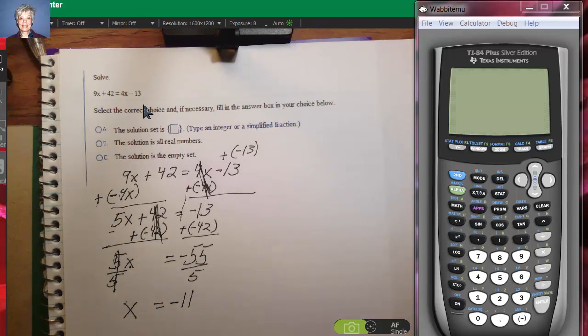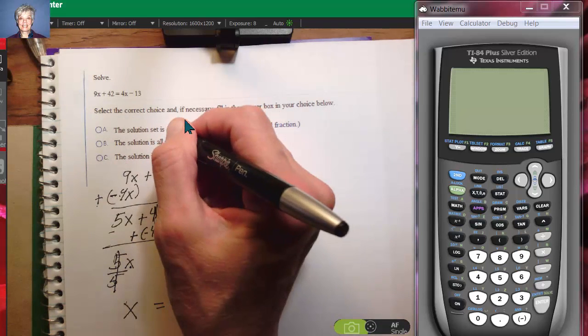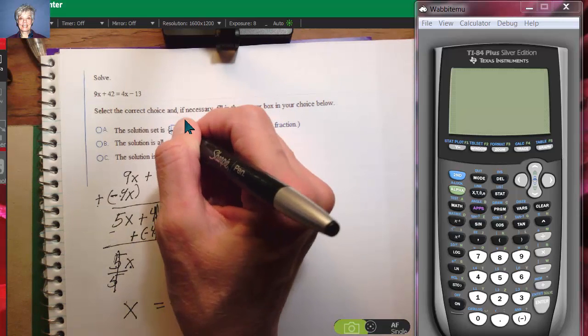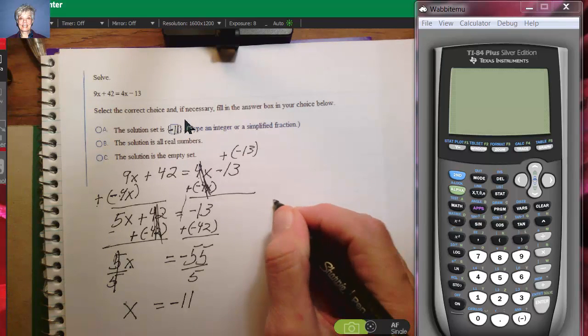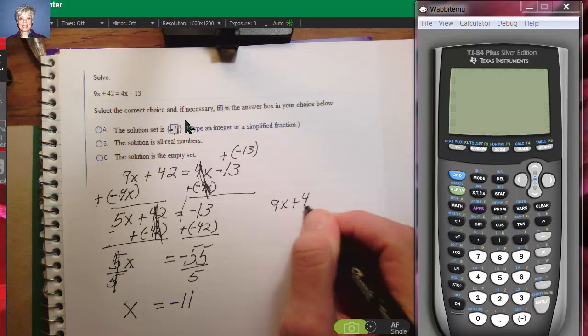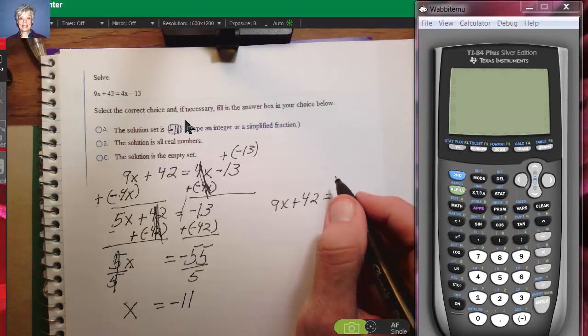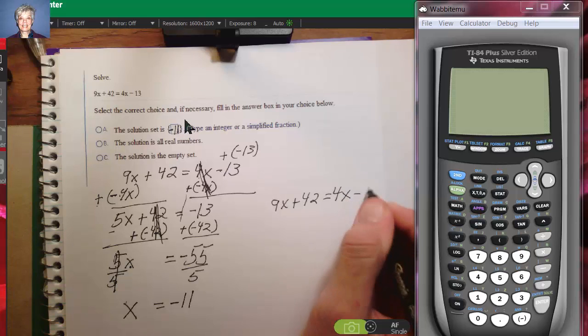Now, look at that. They're actually asking me to solve it. Select the correct choice. What I'm going to do is put negative 11 in here. And now, because I don't have the computer to tell me if I'm right or wrong, I'm going to have to check the answer in the old fashioned way. So here we go.